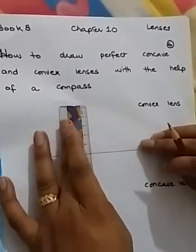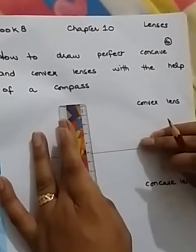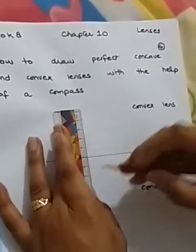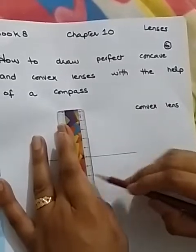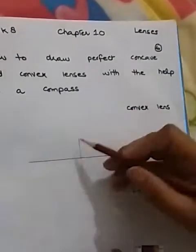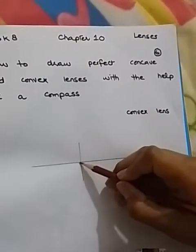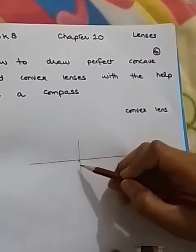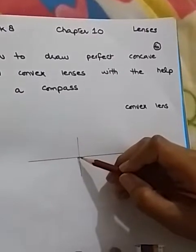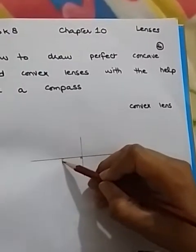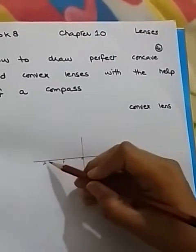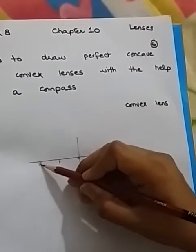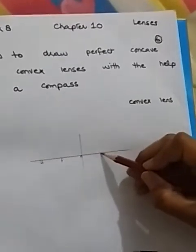From the center, 2 centimeters above and 2 centimeters below the line, and draw a line. Now I'm going to label it. This is O, which is the optical center of this convex lens. This is f, this is 2f — 2 centimeters is f and 4 centimeters is 2f.